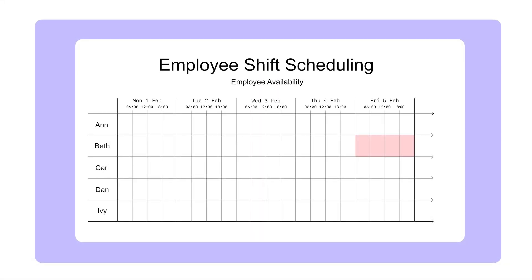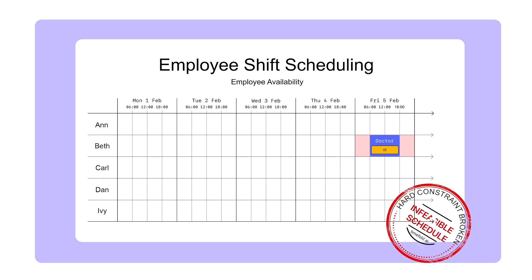For example, when Beth has next Friday off for a wedding party, she should not be assigned to a shift on that Friday. Doing so would break a hard constraint, making this schedule infeasible.